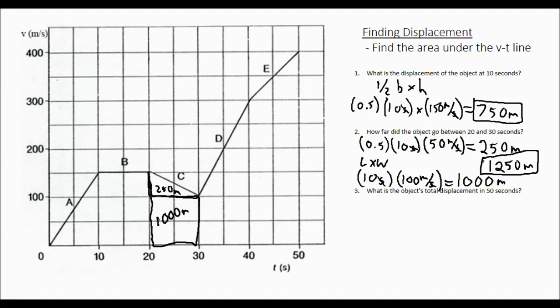Question three. What is the object's total displacement for the 50 seconds? So we have to find the area under this entire line. What you do, just start dividing it up into the different shapes.